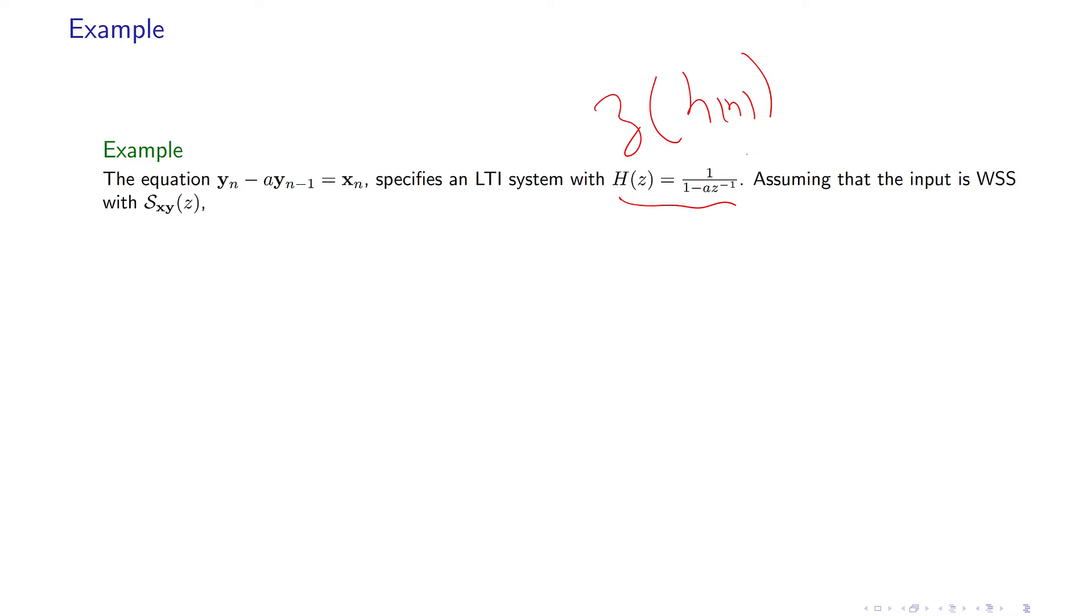Now, if the input is wide-sense stationary, we have the autocorrelation function of the output is equal to the power spectral density of the input times this one.